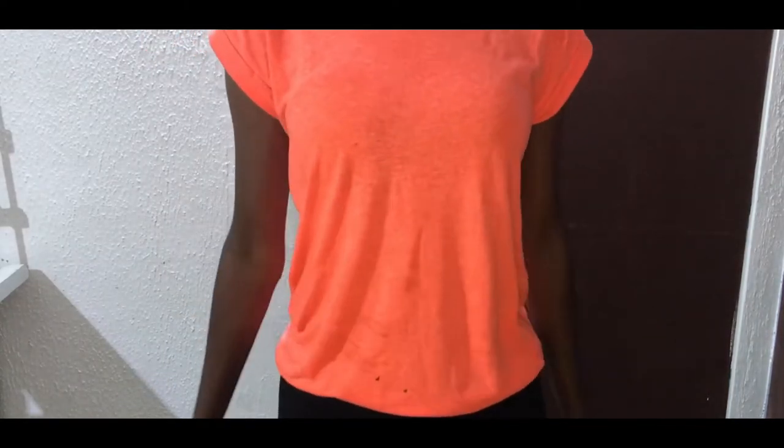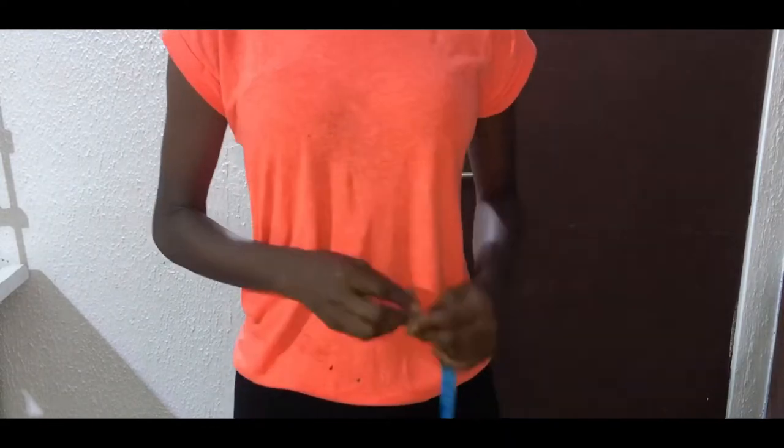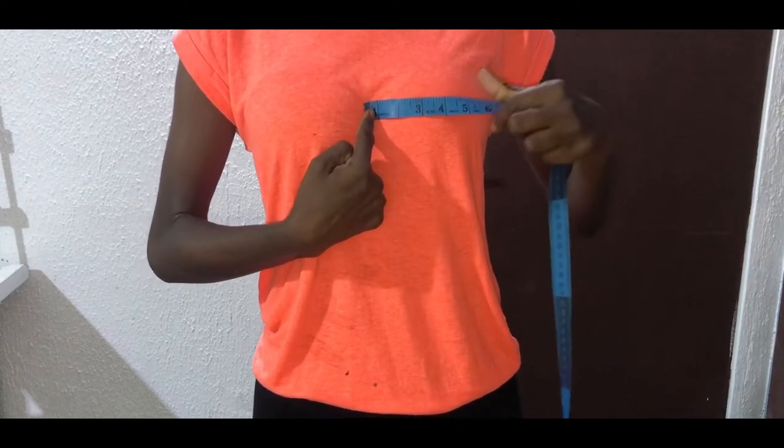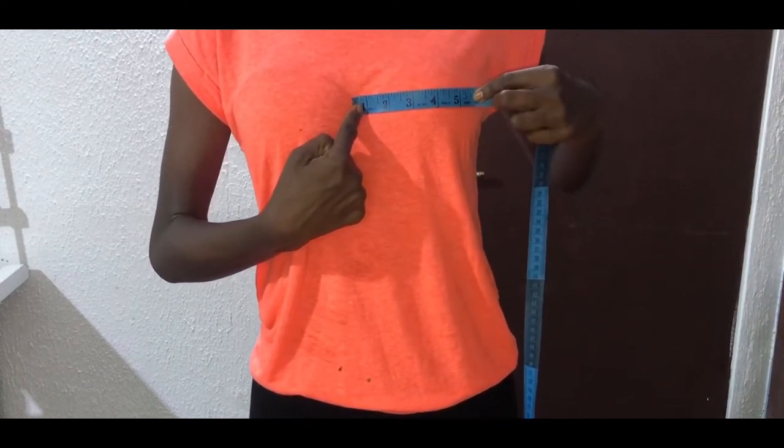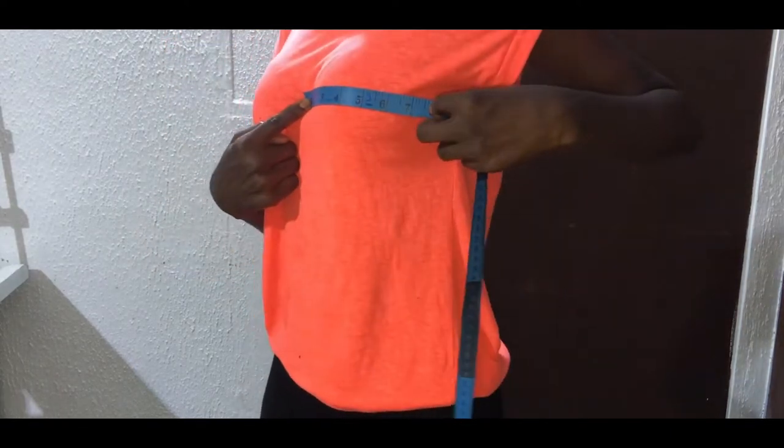So I'll start by taking the horizontal measurement of the bra cup by placing the tape on the breast bone, which is the center between the two breasts, moving down to the breast point which is the upper part of the bust and ends at the side of the bust. So my horizontal measurement is nine inches.